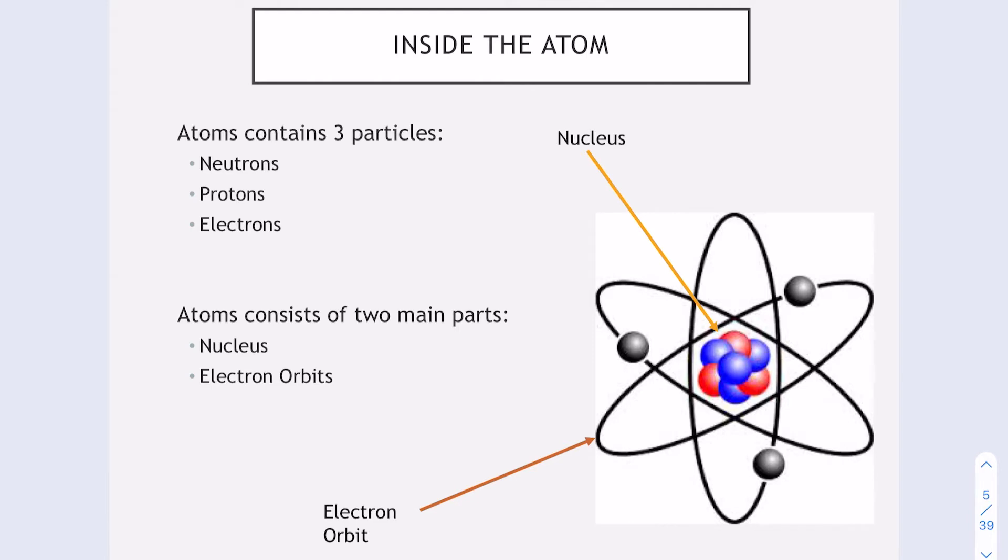So here's a quick look at the atom. We have three particles inside our atom: neutron, proton, and electron. The atom consists of two main parts, your nucleus, which is labeled here with the blue and red circles, and the electron orbit, which is the black lines surrounding the atom and the nucleus.